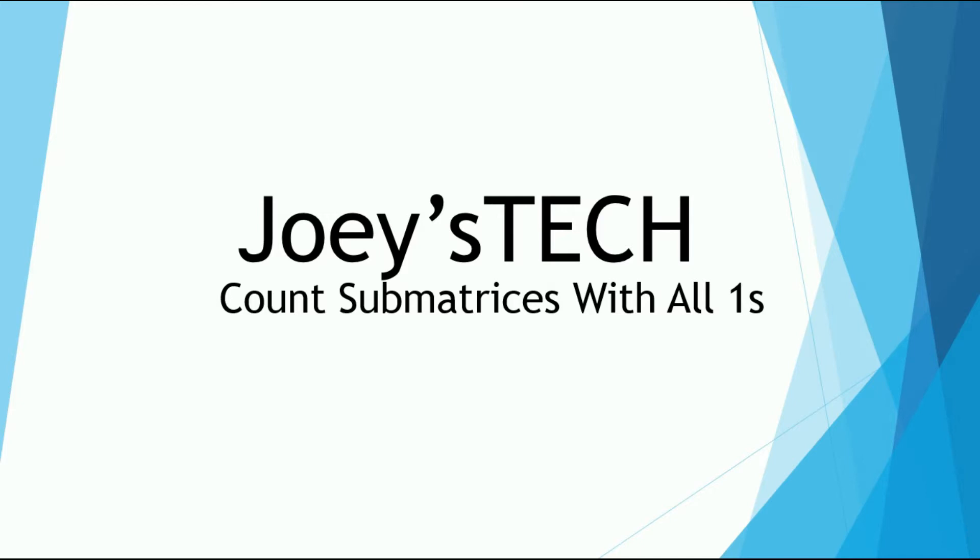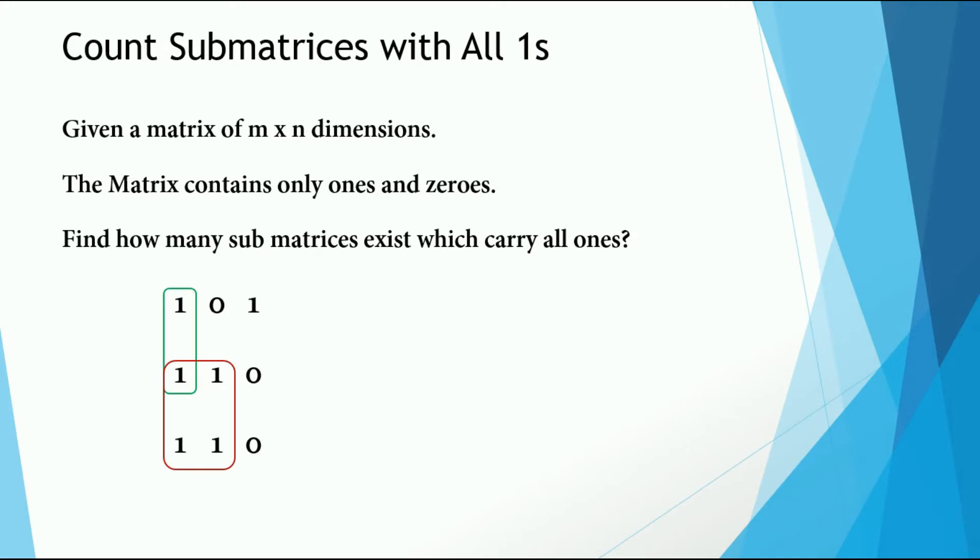Without further delay, let's check out its problem statement. You are given a matrix of m by n dimensions. The matrix contains only ones and zeros. You need to find out how many sub-matrices exist which carry all ones. If you see this matrix, then various sub-matrices of different dimensions exist. This highlighted one represents a sub-matrix of 2 by 1, that is 2 rows and 1 column. Here is another sub-matrix of 2 by 2 that contains all ones. We need to find out how many such sub-matrices exist.